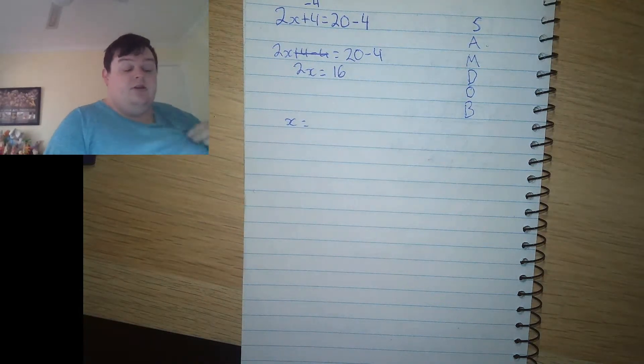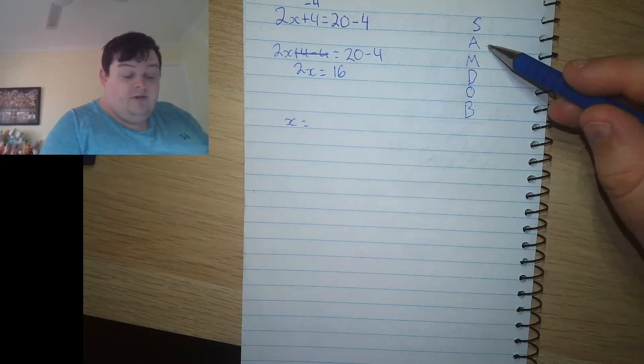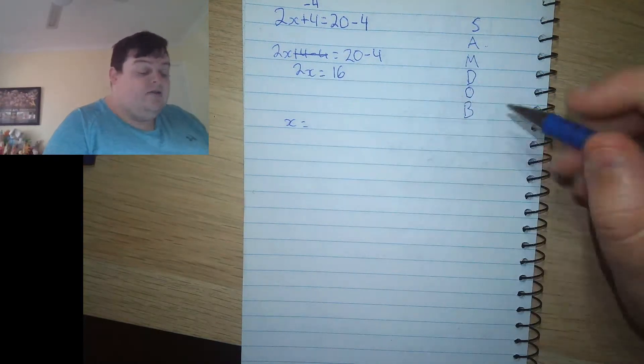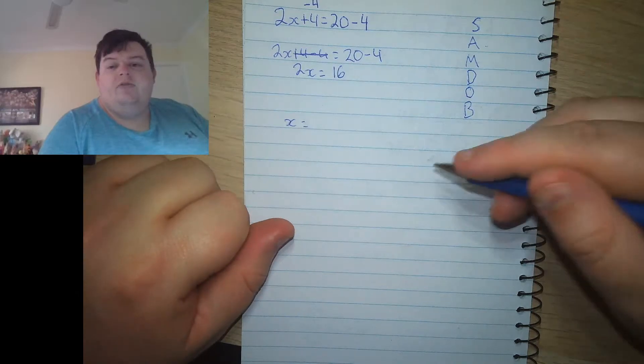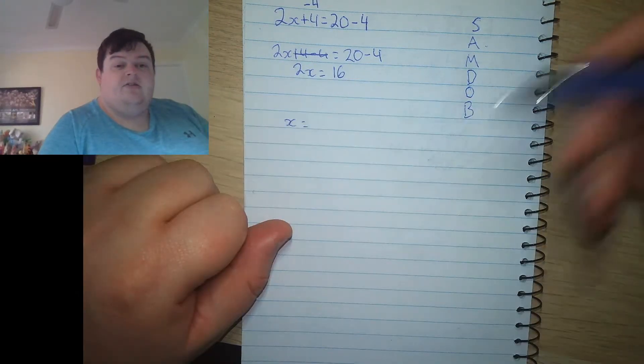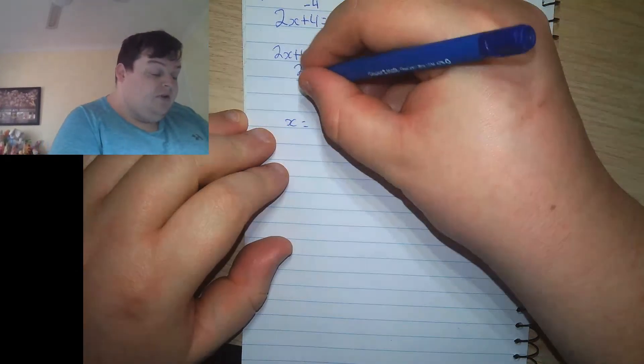2x plus 4 minus 4 cancels each other out entirely. So I get left with 2x equals 16. And you can start to see how this is taking effect now. We're slowly chipping away at the things that have altered x. So the additions are done. Are there any multiplications? Well, yes, there is. There's a 2. So there's 2x. How do you undo timesing something by 2? Well, the answer is you do the inverse. So you can divide by 2, which is the opposite of timesing.